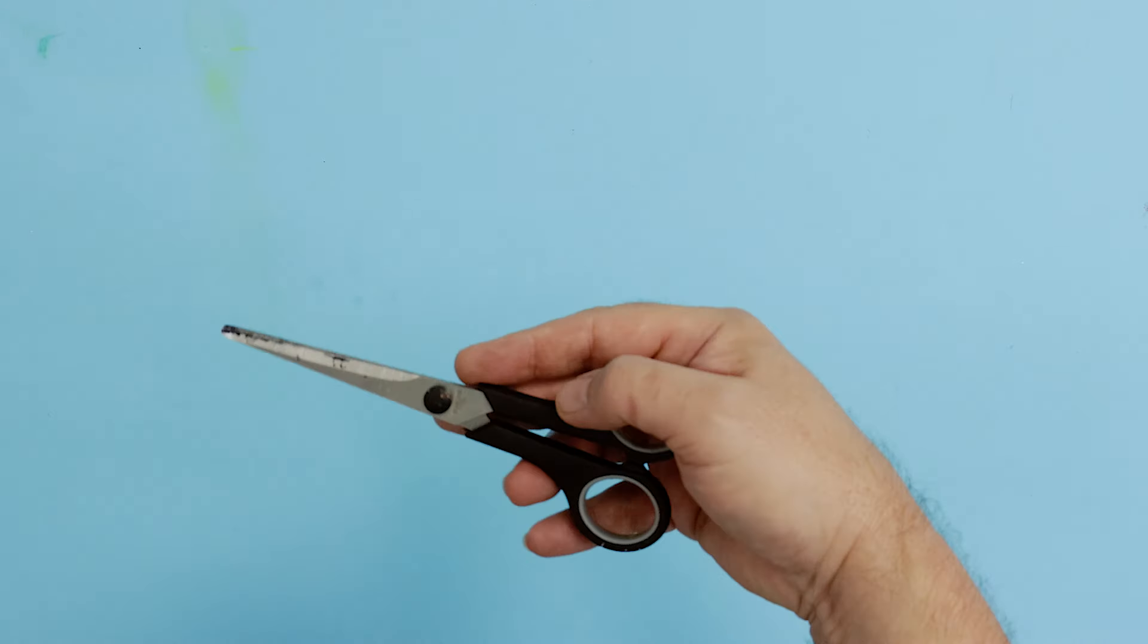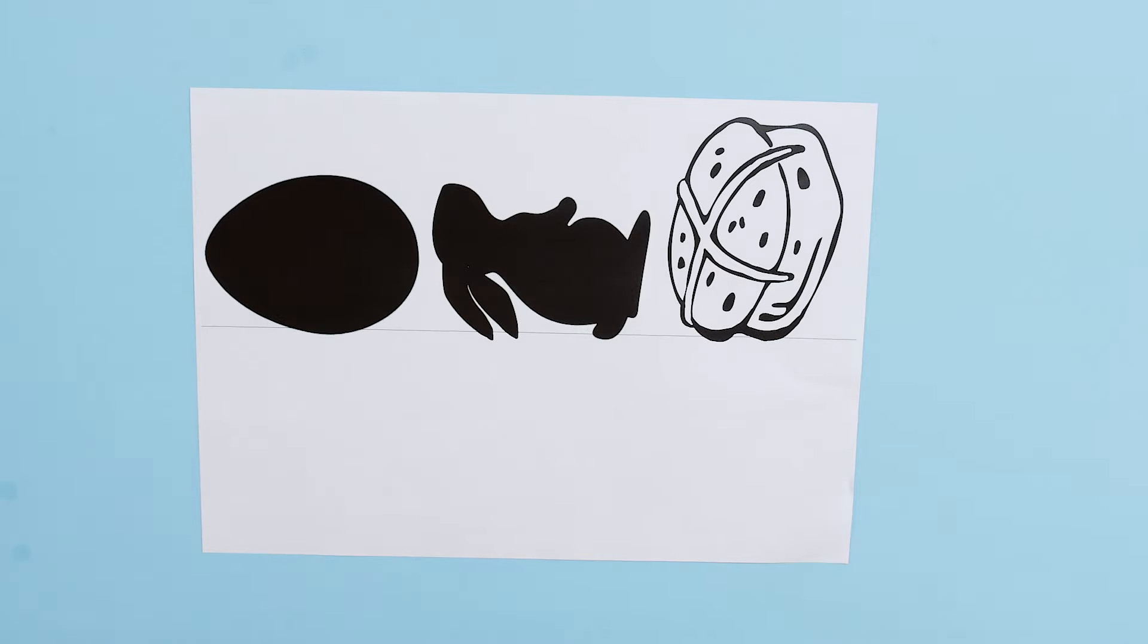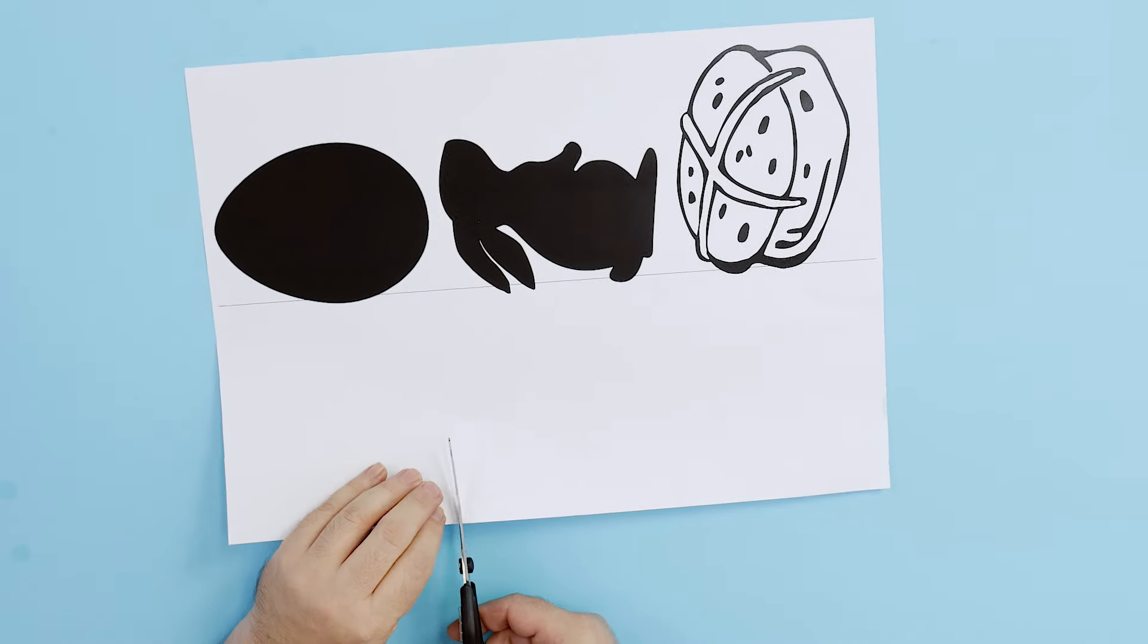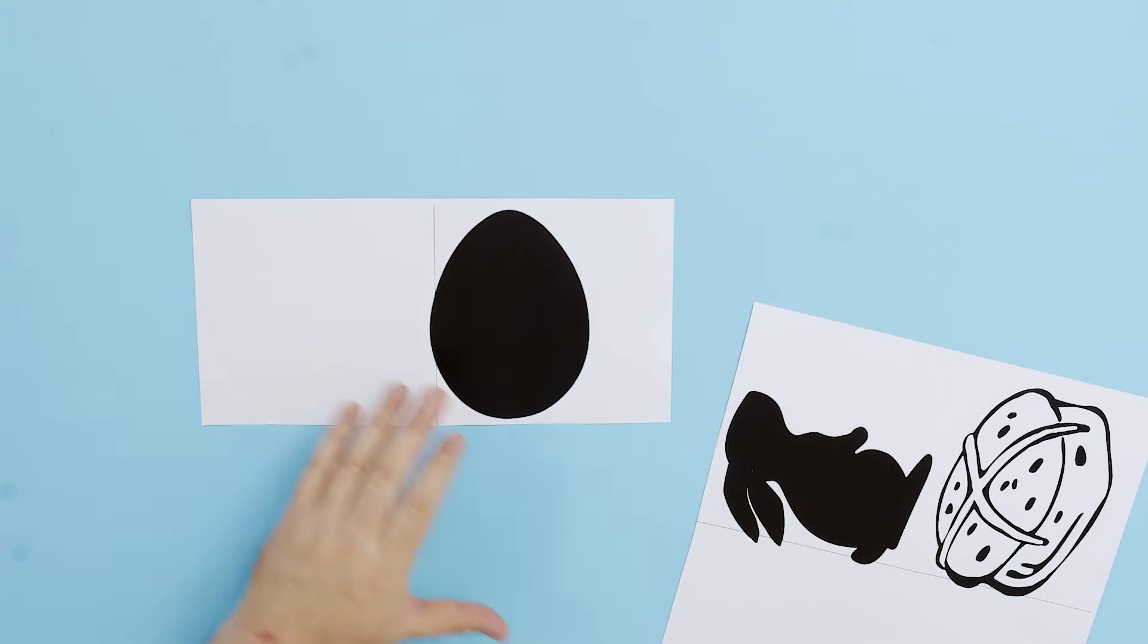We'll also be using some scissors, so if you are not yet an adult you will have to get some help with the cutting out stage. First step is to print out the reference sheet with the three images on it, and you can find this on the Montmartre website.